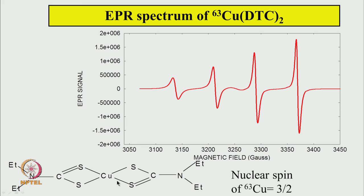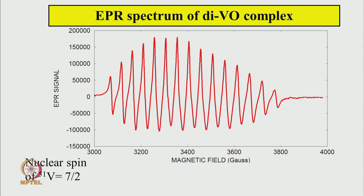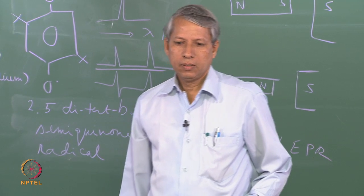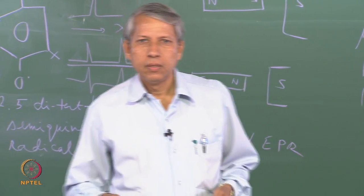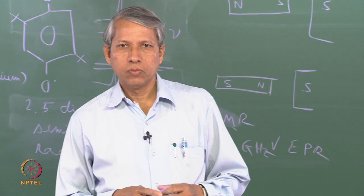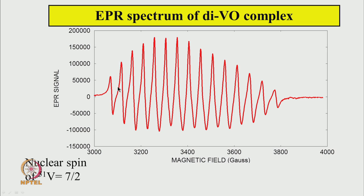A vanadyl complex with vanadium nuclear spin 7/2 shows as many as 15 lines with quite unusual intensities: starting from low intensity on the left, increasing toward the middle, then decreasing again. The line widths also vary — narrower in the middle and broader at the edges — giving a distinctive envelope shape.